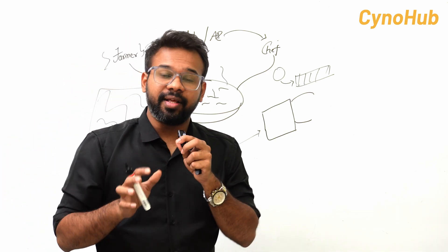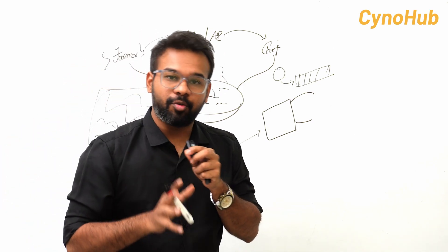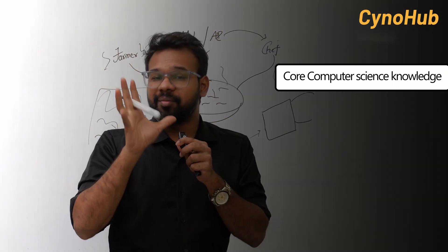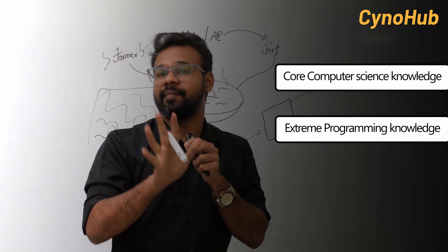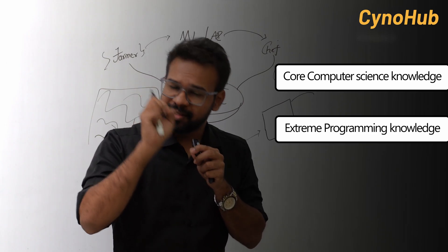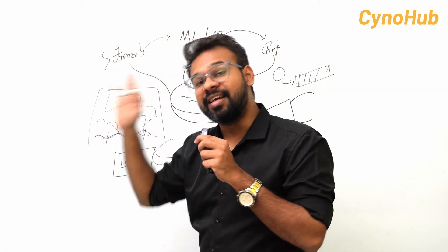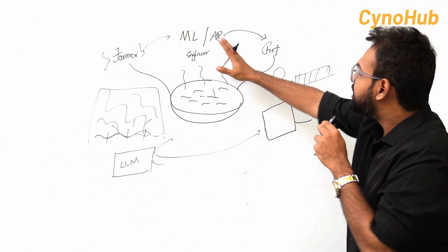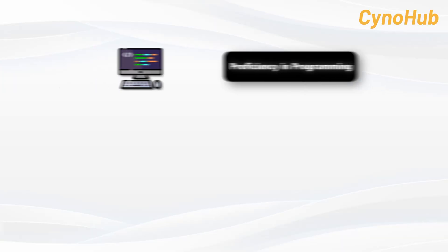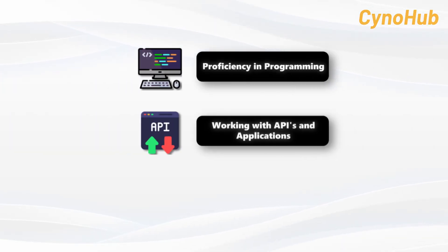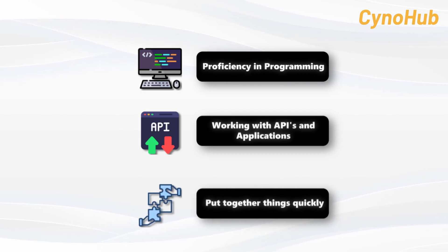Machine learning engineering is a time-intensive process. You need proper core computer science knowledge, programming knowledge, and a lot of skillset and fundamentals. AI engineers, on the other hand, need an idea of programming, and work with different apps and APIs.